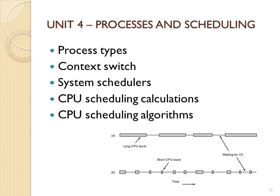In summary, we've talked about IO-bound versus CPU-bound processes, context switching — saving the current process context and loading the next, which is overhead — and the different system schedulers: short-term, long-term, and medium-term. The CPU scheduler is the short-term scheduler. We discussed calculations used to test and compare algorithms, and six CPU scheduling algorithms. Next time we will do some examples of CPU scheduling algorithms.